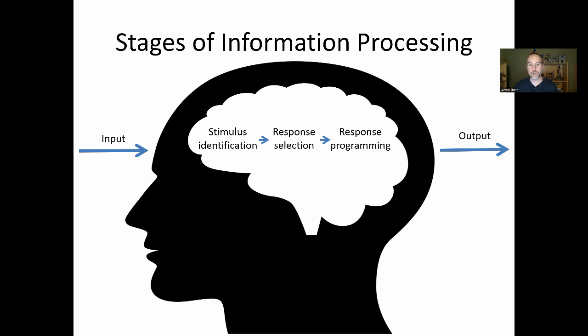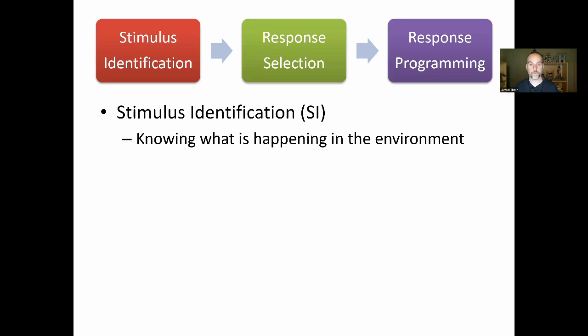So what is happening in the middle stage — the mind? We're going to introduce a framework called information processing, which posits three main stages between input and output. This is a very general, broad framework, which means it can apply to many situations. The three stages are stimulus identification, response selection, and response programming — we're going to talk about those three stages in this module and see them come up throughout the rest of the course.